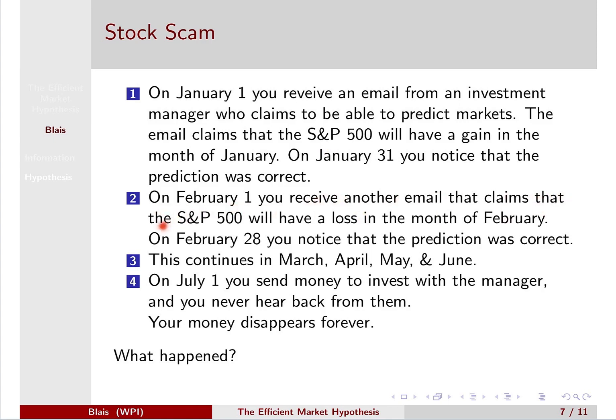The next day, you receive another email from the same person, this time claiming the S&P 500 will have a loss in February. February ends on the 28th in a non-leap year, and the prediction was correct again — the S&P 500 did decrease. So this fund manager is two for two. This continues through March, April, May, and June. After six months of consecutive correct predictions, you are convinced this fund manager knows what they're doing. You send them a check to invest, and you never hear back from them — your money disappears forever. You have been scammed.